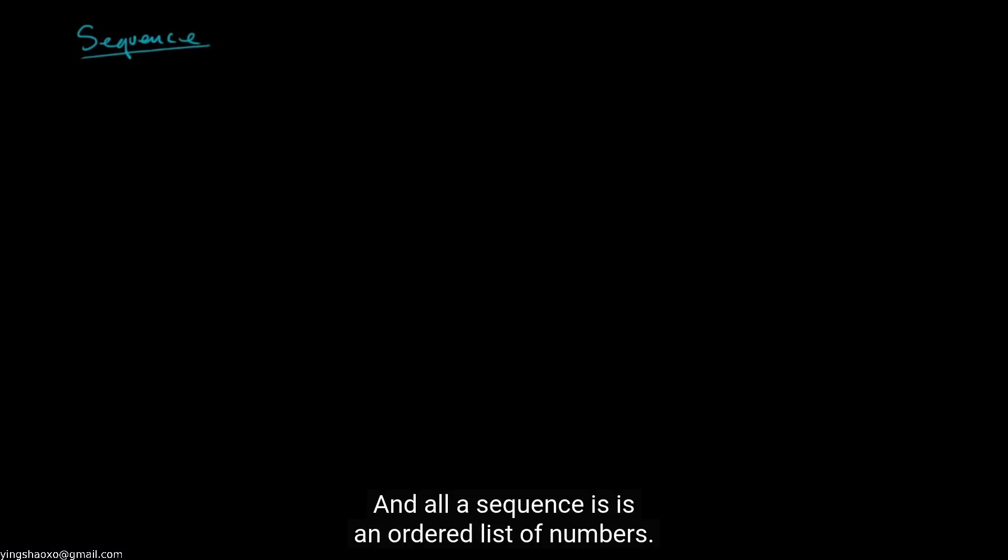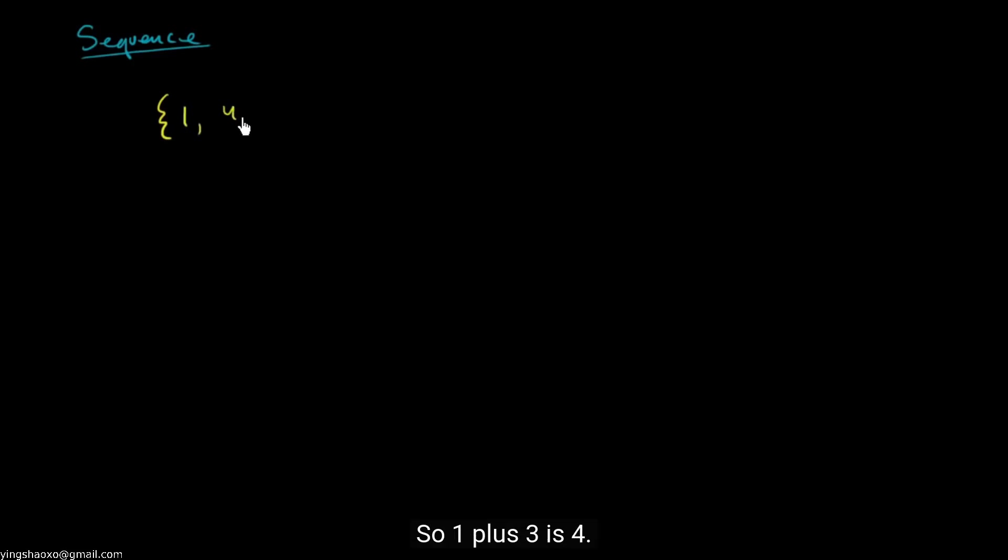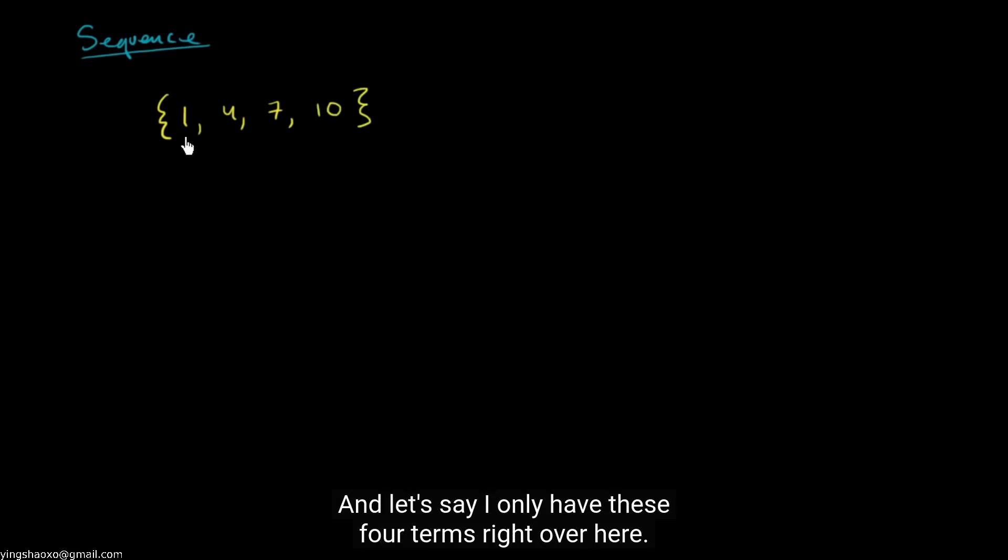For example, I could have a finite sequence — that means I don't have an infinite number of numbers in it. Let's say I start at one and I keep adding three. So one plus three is four, four plus three is seven, seven plus three is ten. And let's say I only have these four terms right over here — we would call this a finite sequence.